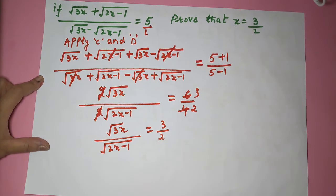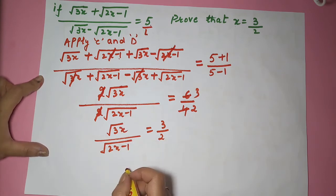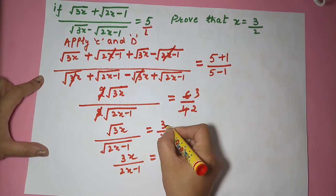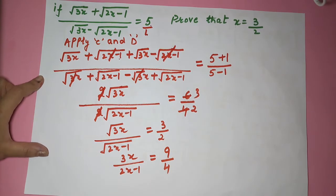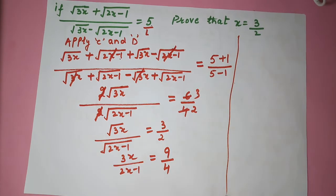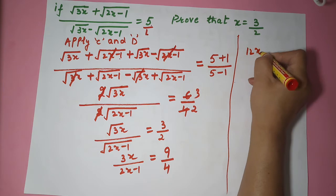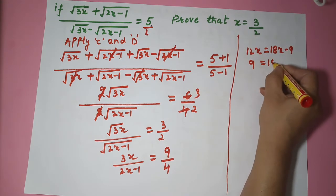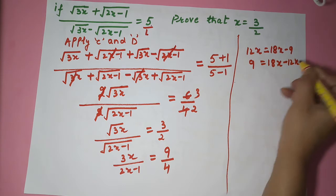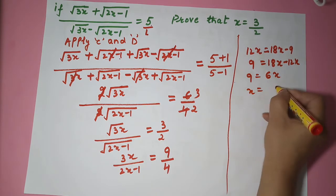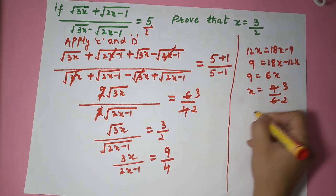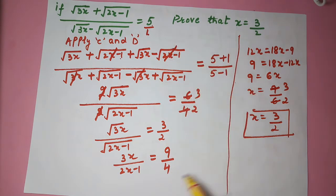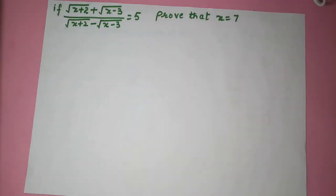The 2s cancel, leaving under root 3x upon under root of 2x minus 1 equal to 3 by 2. To get rid of the root, we square both sides, getting 3x upon 2x minus 1 equal to 9 by 4. Cross multiplying: 12x equals 18x minus 9. Shifting terms: 9 equals 6x, so x equals 9 by 6, which is 3 by 2. Componendo and dividendo is making your life easier.